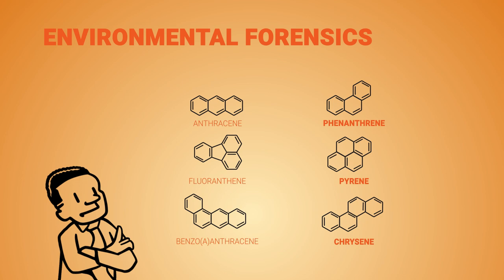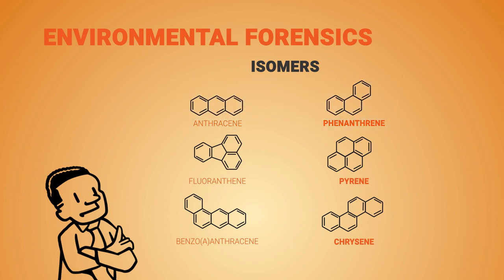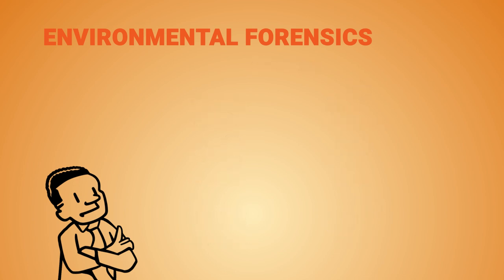Shown here are examples of PAH pairs that are isomers. They have the same molecular formula, but slightly different structures, and therefore different chemical behaviors. Because of this, their relative abundances can be used as a line of evidence to distinguish sources. The bolded isomers are the more stable of the pair and tend to be enriched during slow cooling, for example during petrogenesis. The bottom pair have four rings and are considered high molecular weight PAHs, while the top pair with three rings are considered low molecular weight PAHs. High molecular weight PAHs are generally formed in relatively higher concentrations by combustion at high temperatures. In contrast, petroleum generally contains relatively higher concentrations of low molecular weight PAHs.